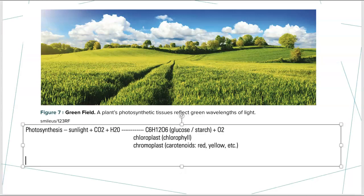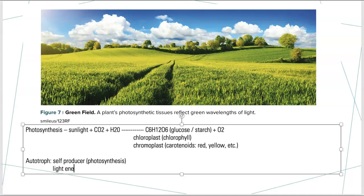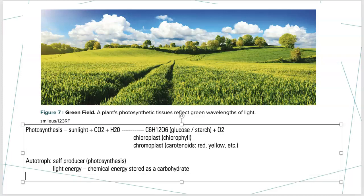Anything that is running the pathway that makes its own energy is generally called an autotroph. These are things we call self-producers. These guys run photosynthesis. They will take light energy and convert it into chemical energy that is often stored as a carbohydrate. Autotroph, auto meaning self.